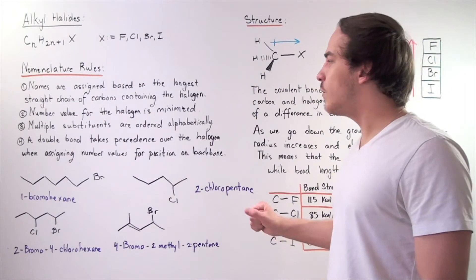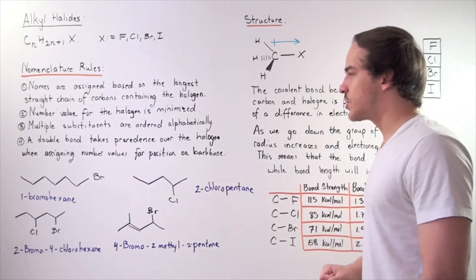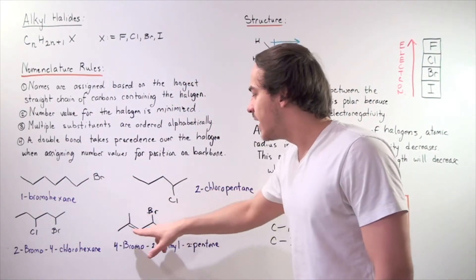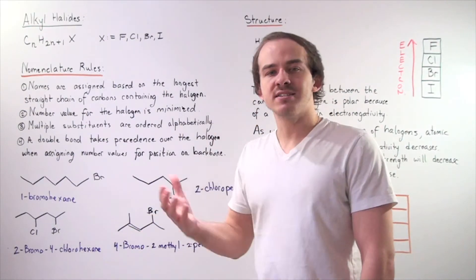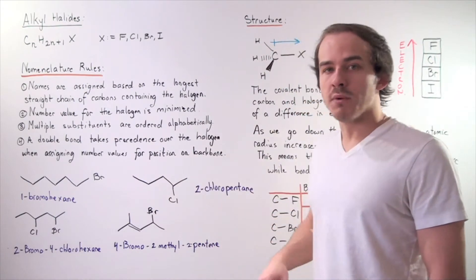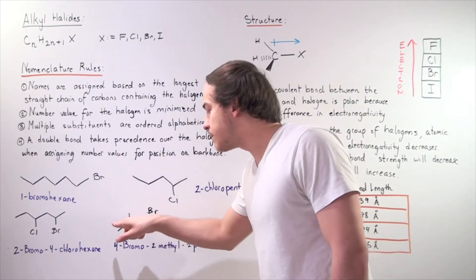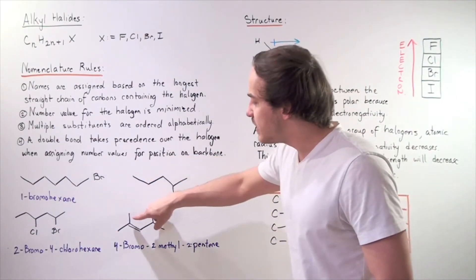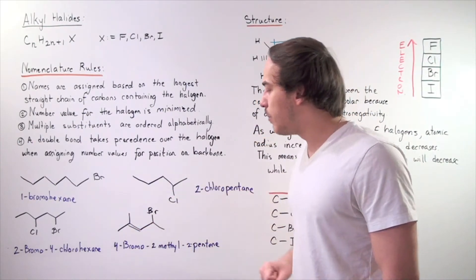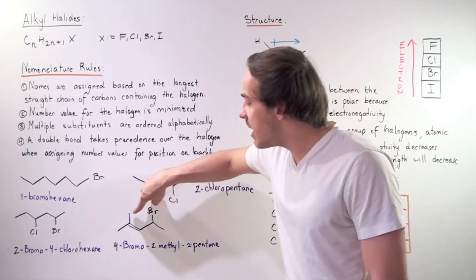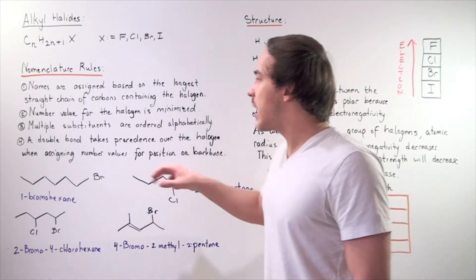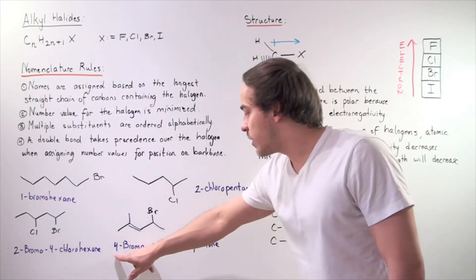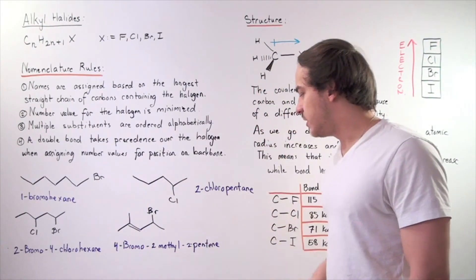The last example. Now we have to take all four rules into consideration. Remember, whenever we have a double bond in our compound, as we do here, the position value for the double bond takes precedence over the position value for our bromine, our halogen. That means we start from this end and not from this end. One, two. On our second position, we have two things: a methyl group and our double bond. Bromine will come before methyl because B comes before M, according to rule three. So we have one, two, three, four, five. That means we have four bromo, two methyl, two pentene.